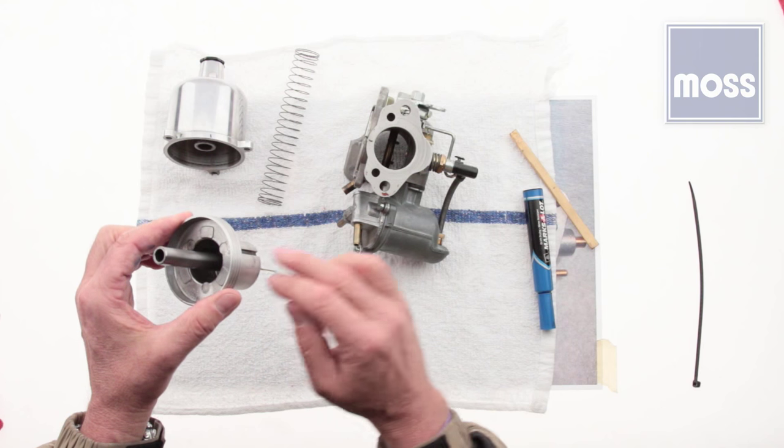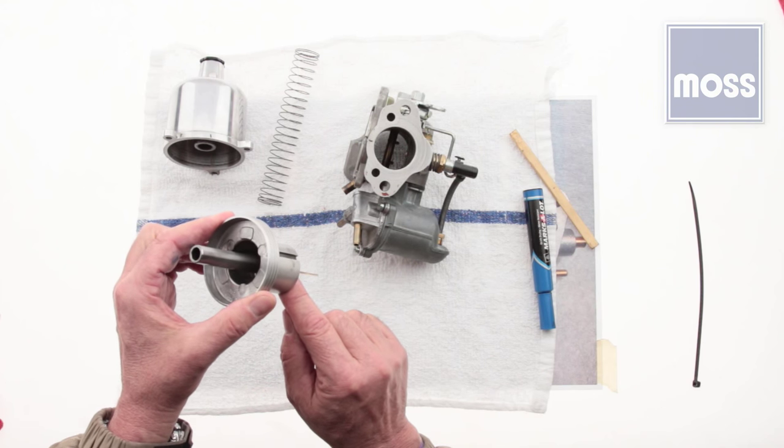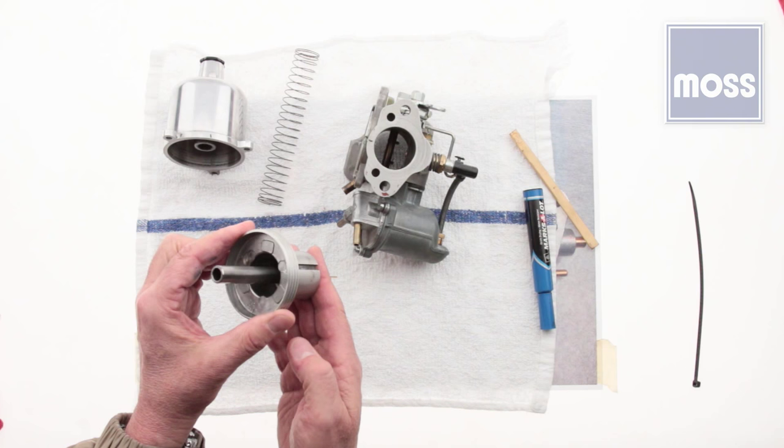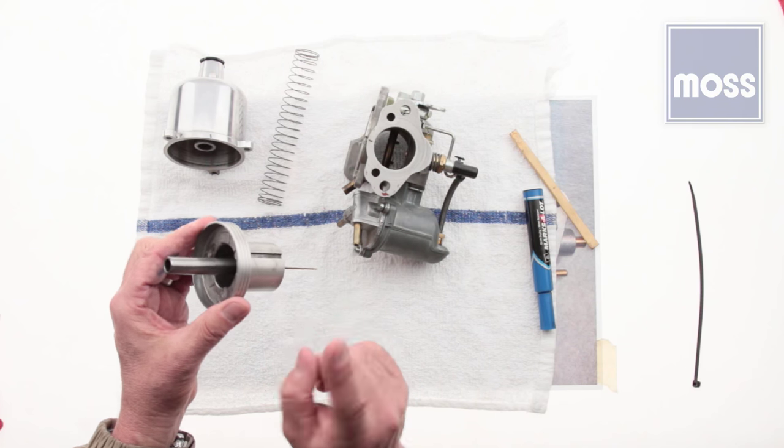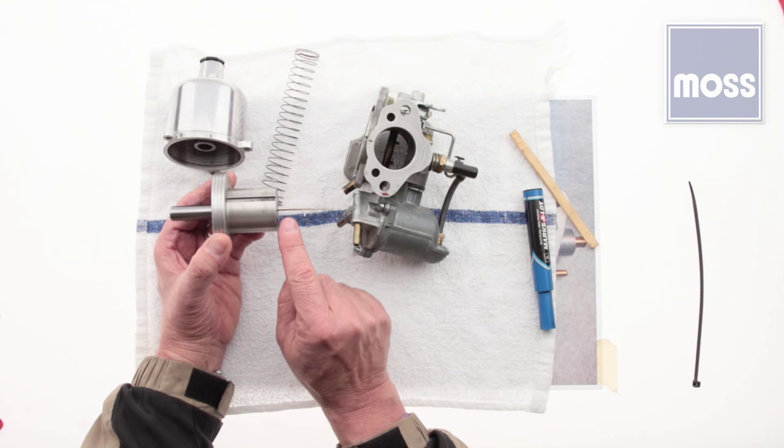So because we're at idle and we only have a little bit of air, she can only pull a little bit of fuel out, and that's great. And the person says, but when the piston goes up, the needle is still in the jet. We're not going to be able to get enough fuel. But notice, look carefully at this needle.